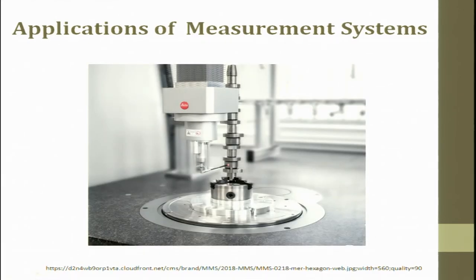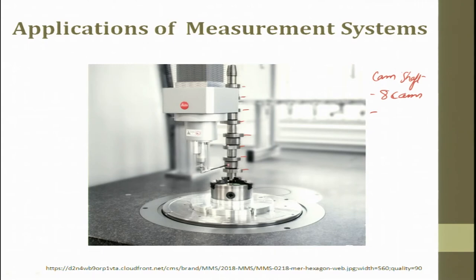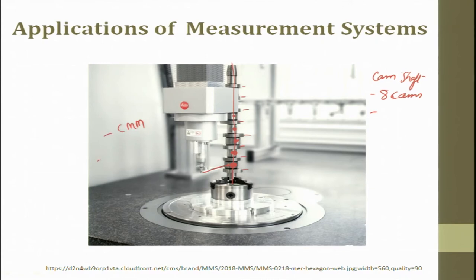Here is a camshaft with maybe 8 cams. Cams are always used for timing - something like a timer for the timely release of fluid or whatever it is. All these cams are attached to a shaft or are an integral part of a shaft. You can see these are the areas where the cam will be in contact with the housing or some place, and we are trying to measure the individual values of each cam. This is done on a CMM machine - coordinate measuring machine - where a stylus comes in contact with it and we try to get a digital display of the value at any given point of time.